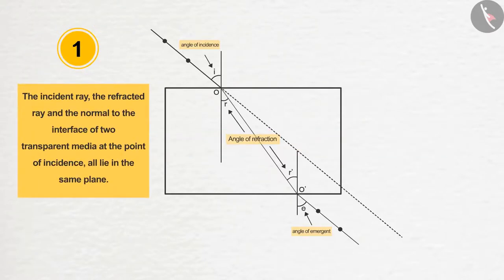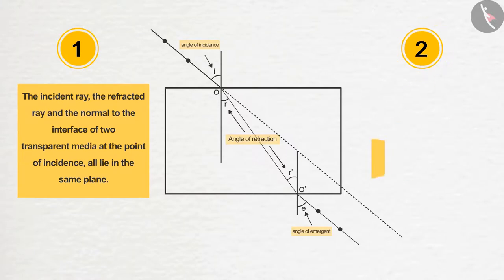The incident ray, the refracted ray and the normal to the interface of two transparent media at the point of incidence all lie in the same plane. The ratio of sine of angle of incidence to the sine of angle of refraction is a constant for the light of a given color and for a given pair of media. This law is known as Snell's law of refraction.